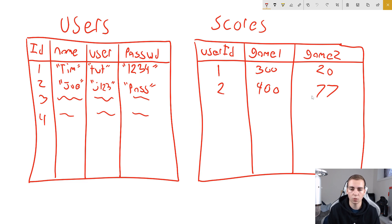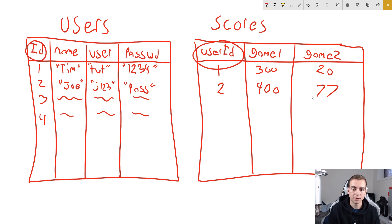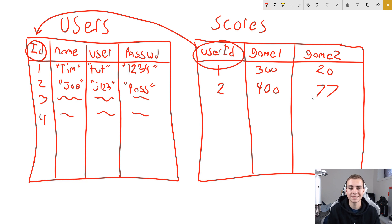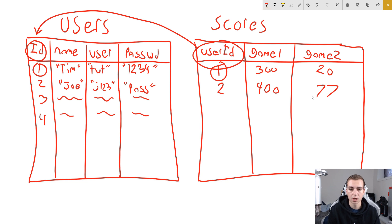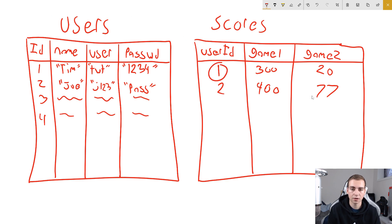The concept of a foreign key essentially means that one column — in this case it's going to be our user ID column — in what's known as the child table is going to be the same as the column in the parent table. So I have a column called user ID, and a column called ID. This user ID column is actually going to be what's called a foreign key which references this ID column. So every time we create a new score, we need to give some kind of user ID that's going to be the same as one of the IDs in the user table, and then we can add the score information.